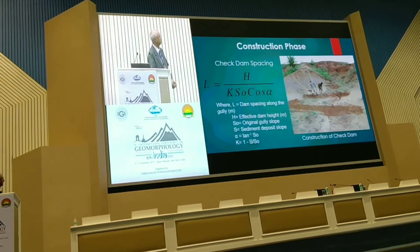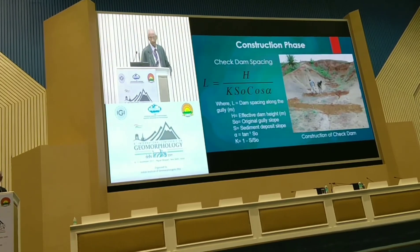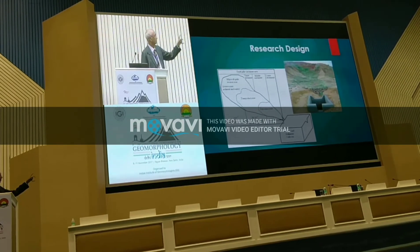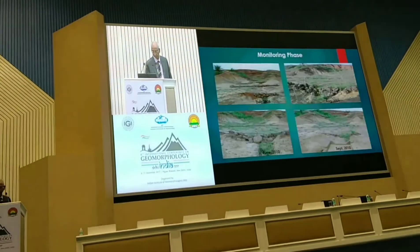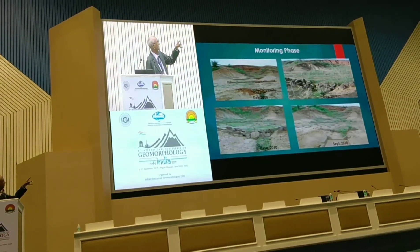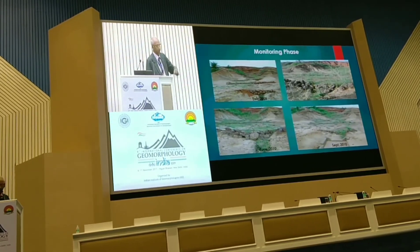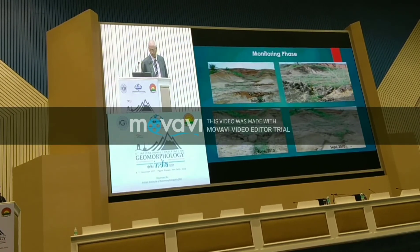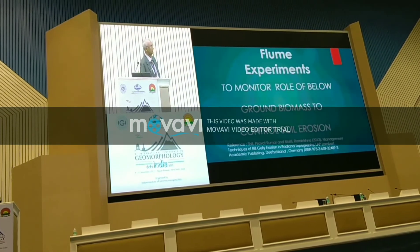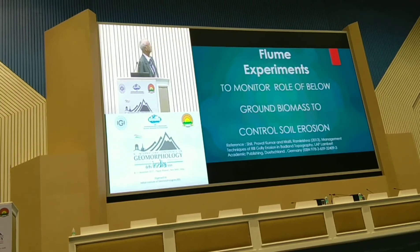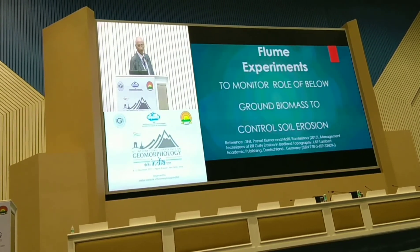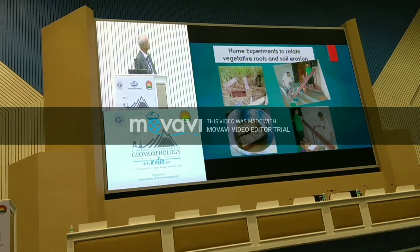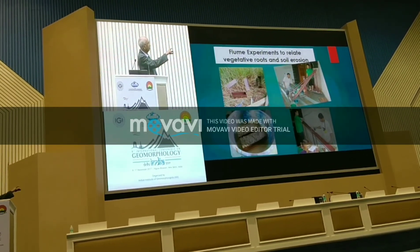An equation was developed for the spacing of check structures and these have been placed in the field. Stone blocks were put in different areas — in 2009 and 2010 — to check gully advance. A very important flume experiment by MIT monitors runoff below ground vegetation and biomass, both in the field and in the laboratory.